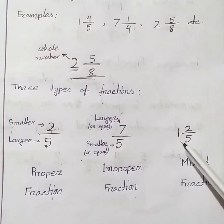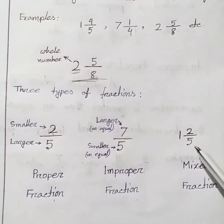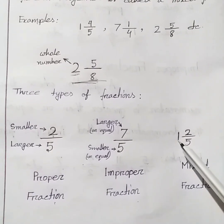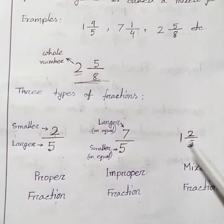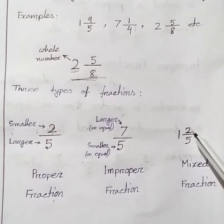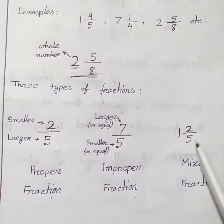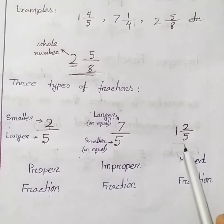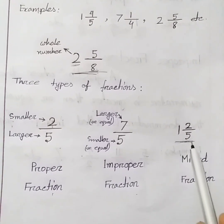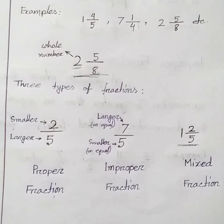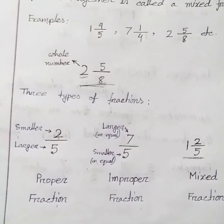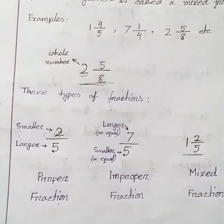And here we get two parts in this fraction: 1 is a whole number and 2 by 5 is a proper fraction. Combining these, it is a mixed fraction. I think the types of fractions are clear to you.